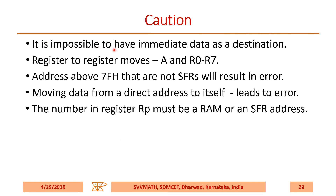It is impossible to have immediate data as a destination. Register-to-register moves involve A and R0 to R7. Addresses above 7FH that are not SFR (special function registers) will result in an error. Moving data from a direct address to itself will also lead to an error. The number in register Rp must be a RAM or SFR address. These are the important points to remember.